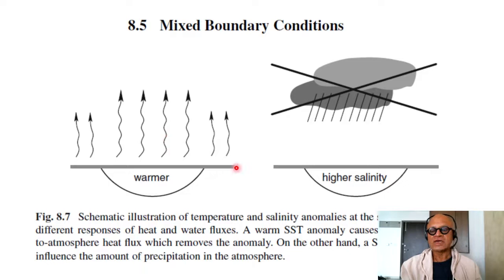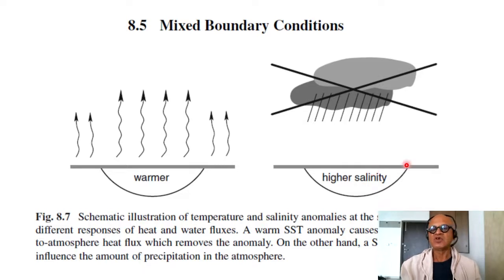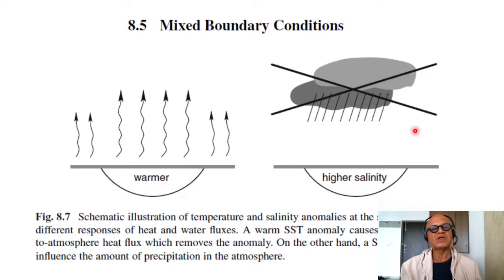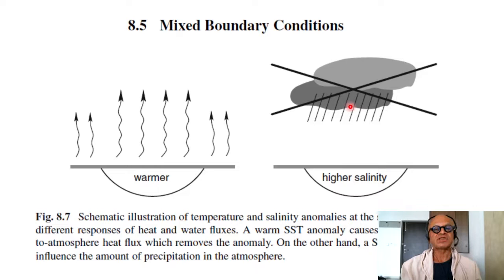On the other hand, an SSS anomaly does not influence the amount of precipitation in the atmosphere. If you have evaporation, you create higher salinity, or you can converge salinity, and you may have freshwater fluxes coming from rivers reducing salinity. But they don't have a direct relation with local precipitation, if you think in terms of atmospheric temperature and ocean temperature versus atmospheric salinity and freshwater flux in the atmosphere.